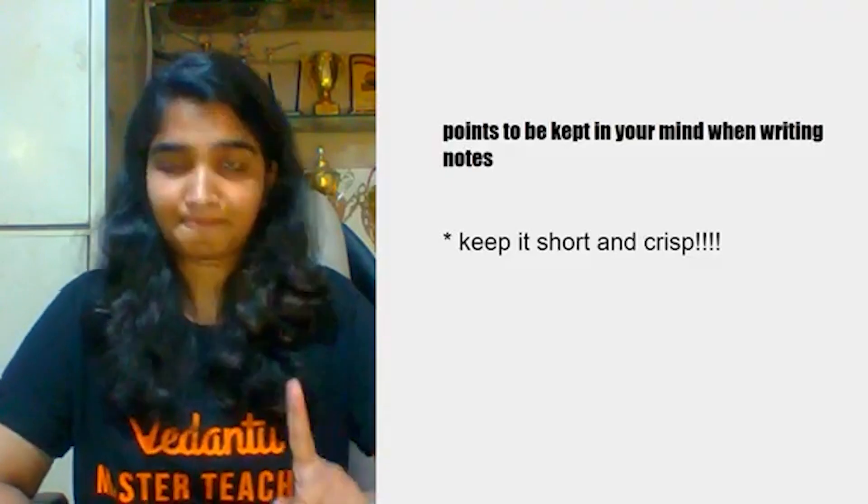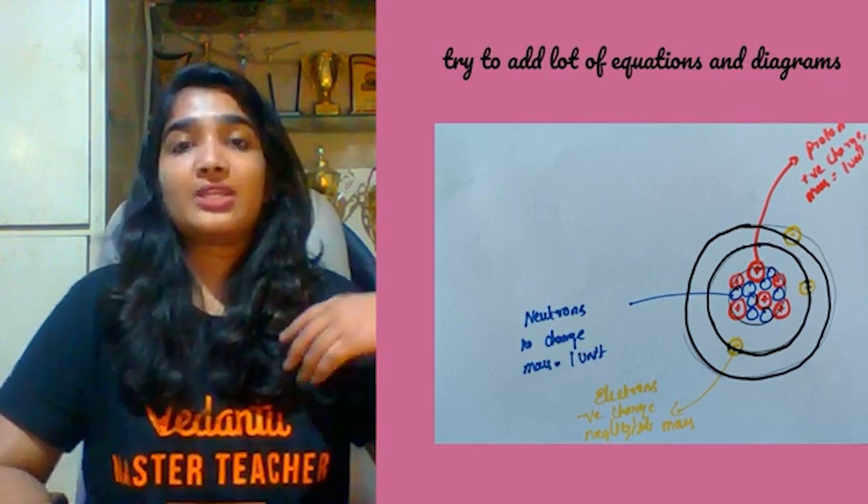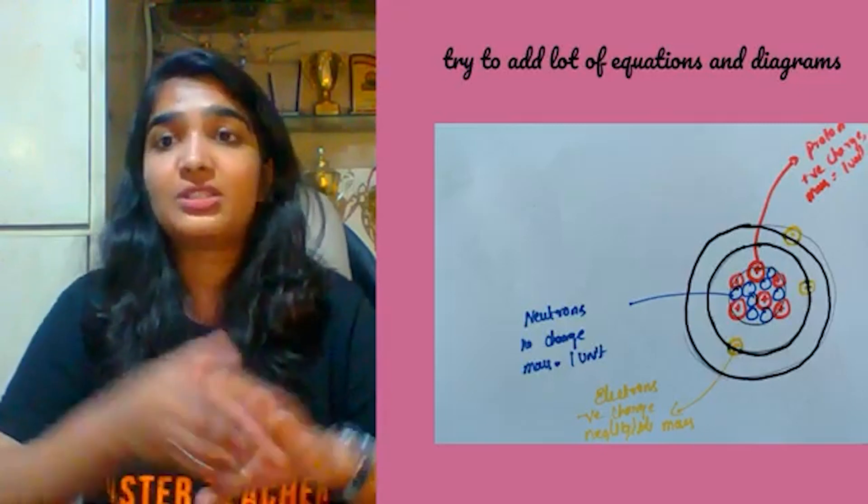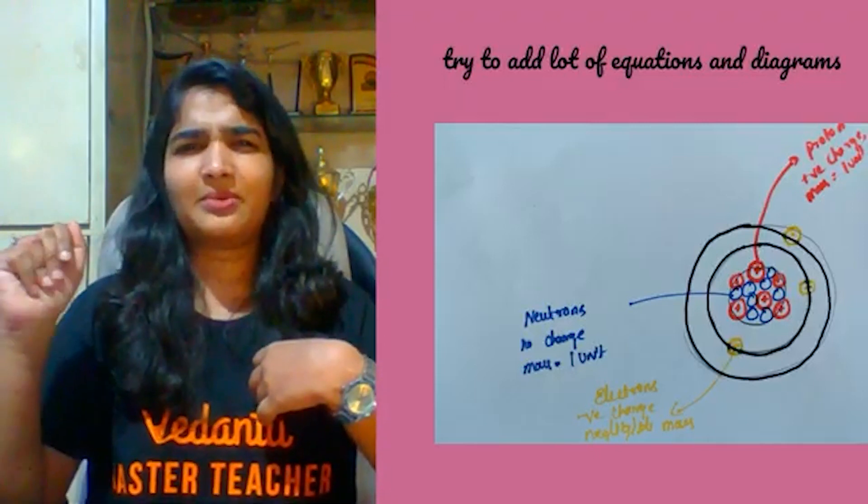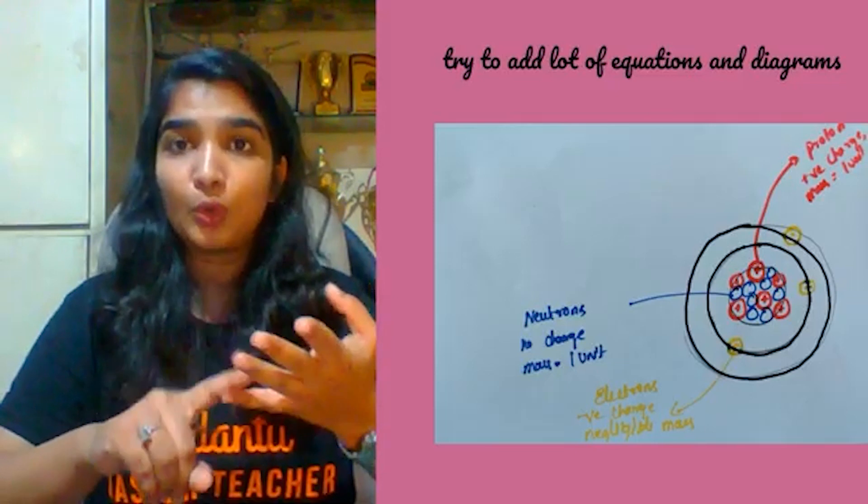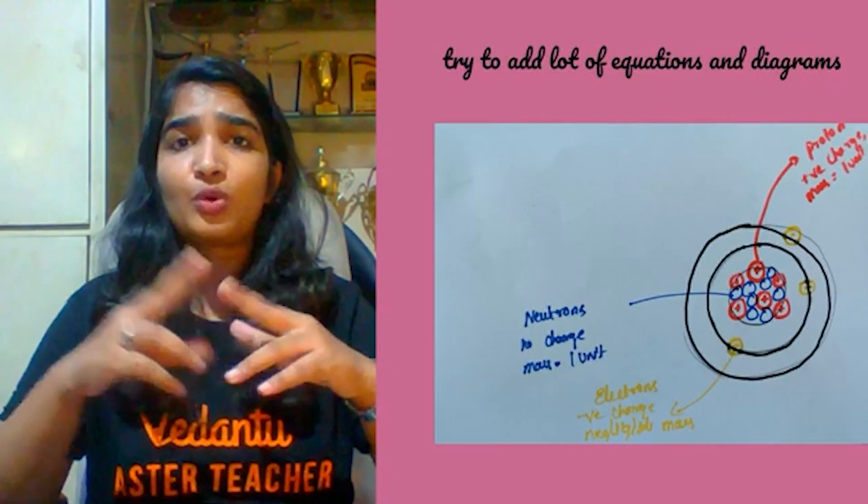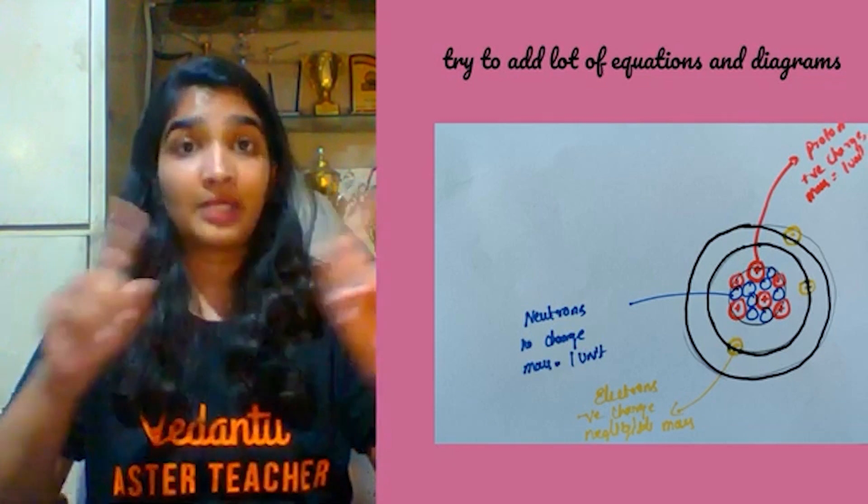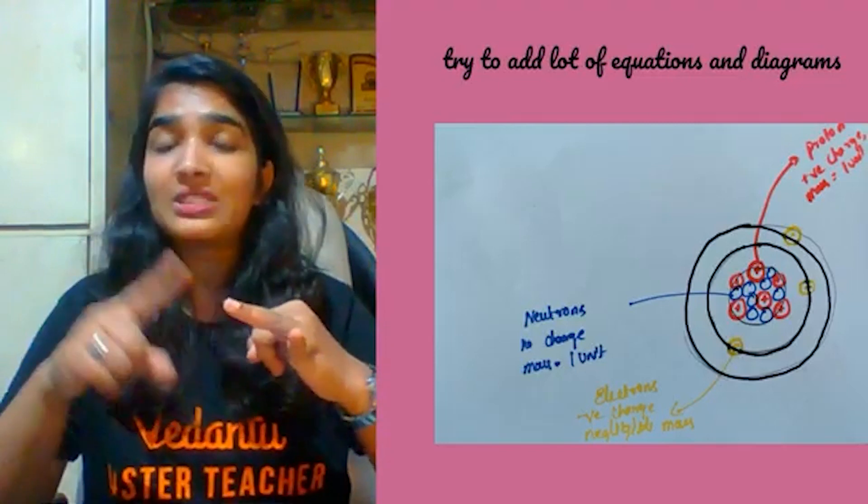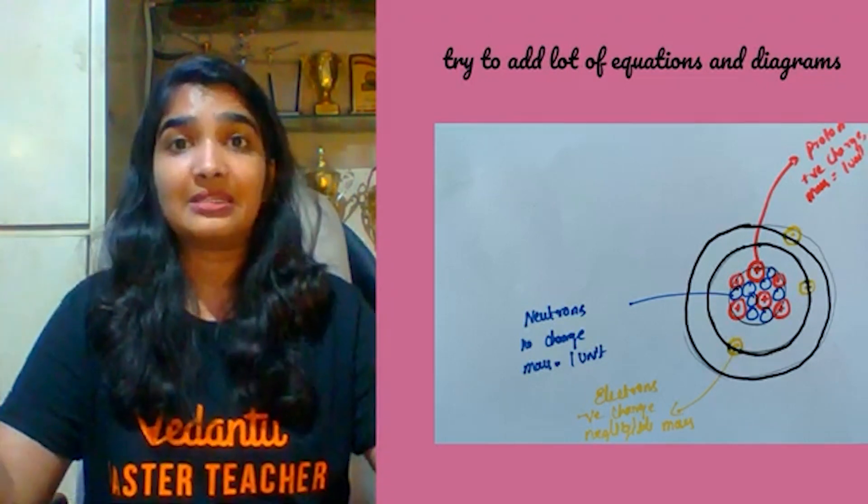And point number two is try to add lot of equations and diagrams. In chemistry there is no scarcity of equations. So whenever wherever possible try to add diagrams and equations. See here in this slide you can see I have drawn an atom. By only looking at this diagram, with no sentences, I can say: an atom has three subatomic particles - protons, neutrons, electrons. Done. Then the nucleus consists of protons and neutrons and it is at the center of an atom. Done. Electrons are revolving around the nucleus. Done. And extra points - neutrons are neutral, protons have positive charge, electrons have negative charge and their masses also. How many points was that? And not even a single sentence, it's only a diagram.